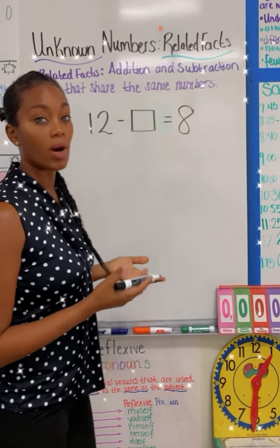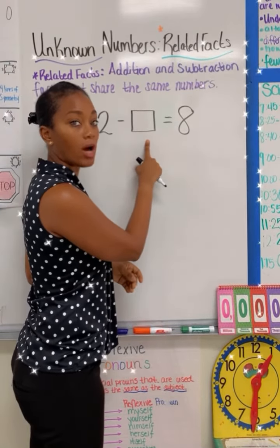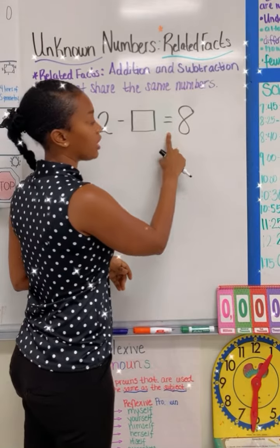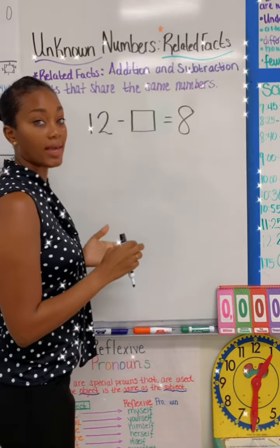Let's try one last problem. Say we have the numbers 12 minus blank, which is our unknown number, which equals to the number eight. In order to find my answer,